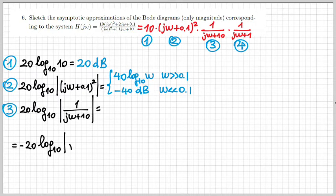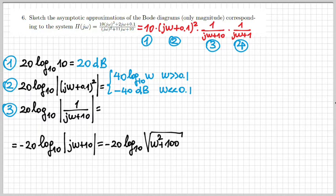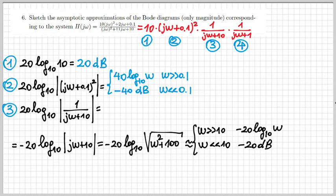Number three is a first order term, but at the denominator. When ω is much larger than 10, this contributes with a negative slope of minus 20 dB per decade. And when ω is smaller than 10, it's flat at 0 dB.